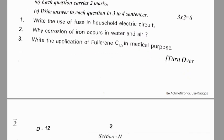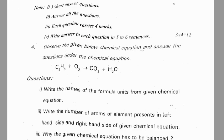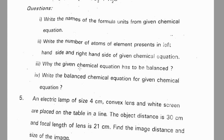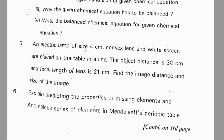Hyderabad district pre-final one question paper: write the uses of fuse in a household electric circuit. Write how corrosion of iron occurs in water and air — write the application. Section 2: observe the given equation and answer the questions under the chemical reactions — it is like a table question. An electric lamp of size 4 cm, a convex lens and white screen are placed on a table in a line. The object distance is 30 cm and focal length of the lens is 21 cm — find the image distance and size of the image.